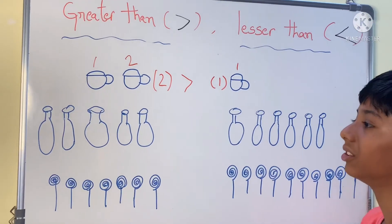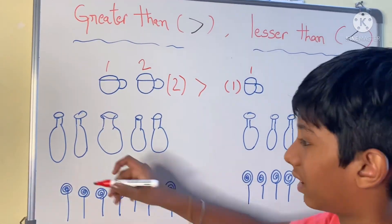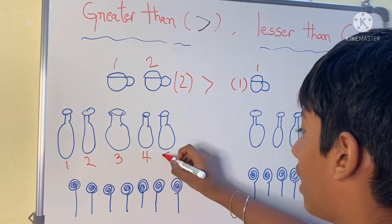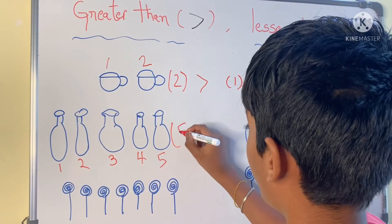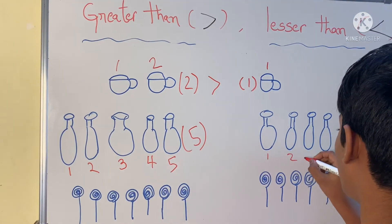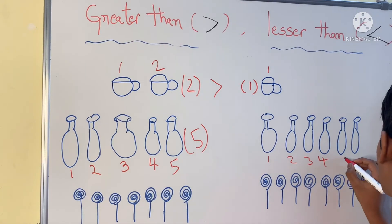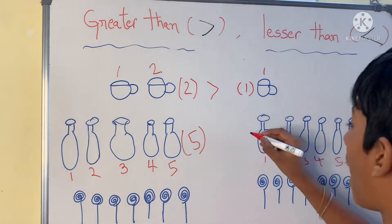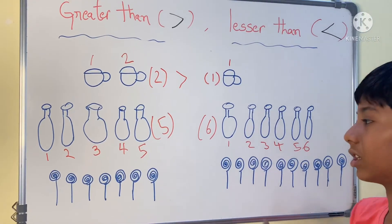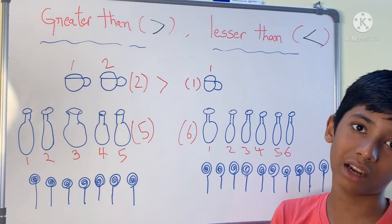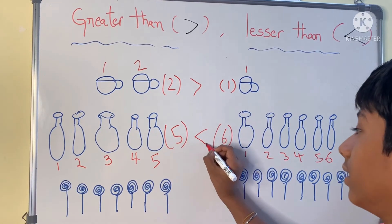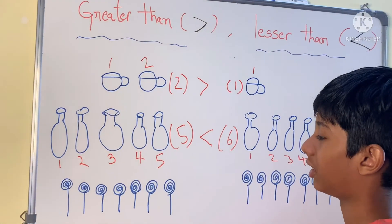Now let us count balloons. How many balloons are here? 1, 2, 3, 4, 5 — there are 5 balloons. Now how many are here? 1, 2, 3, 4, 5, 6 — there are 6 balloons. What is the relationship between 5 and 6? Is it greater than or lesser than? 5 is lesser than 6.